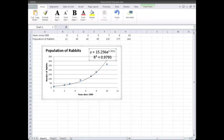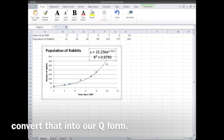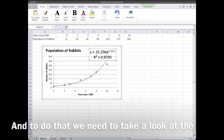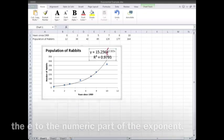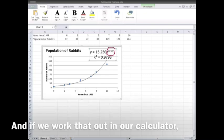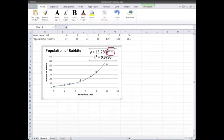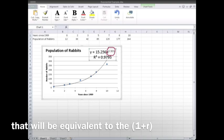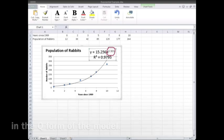So the first thing we need to do is to convert that into our Q form. And to do that, we need to take a look at the e to the numeric part of the exponent. And if we work that out in our calculator, that will be equivalent to the 1 plus r in the Q form of the model.